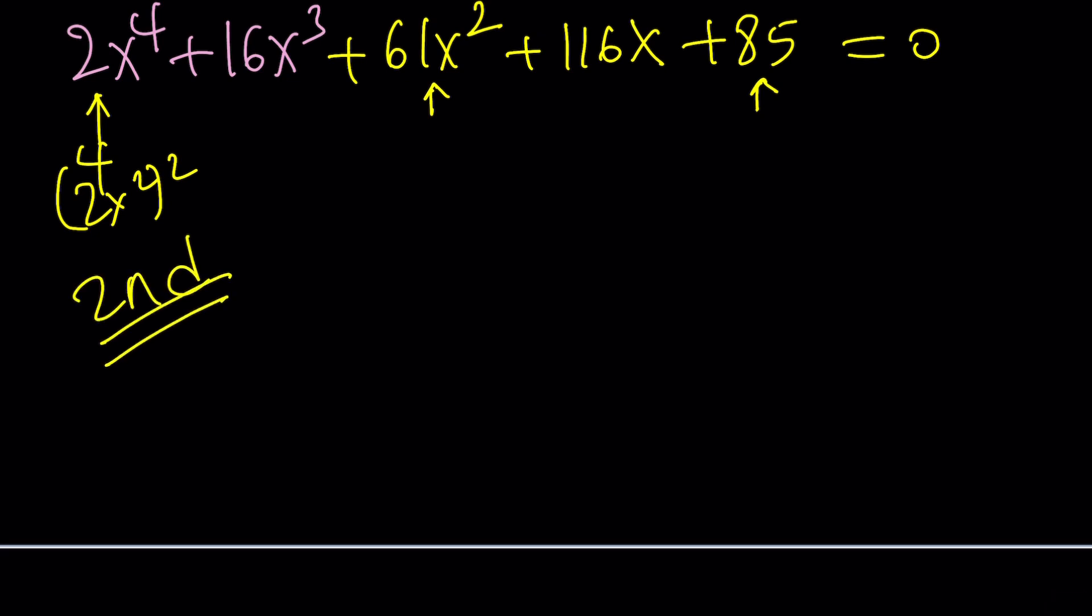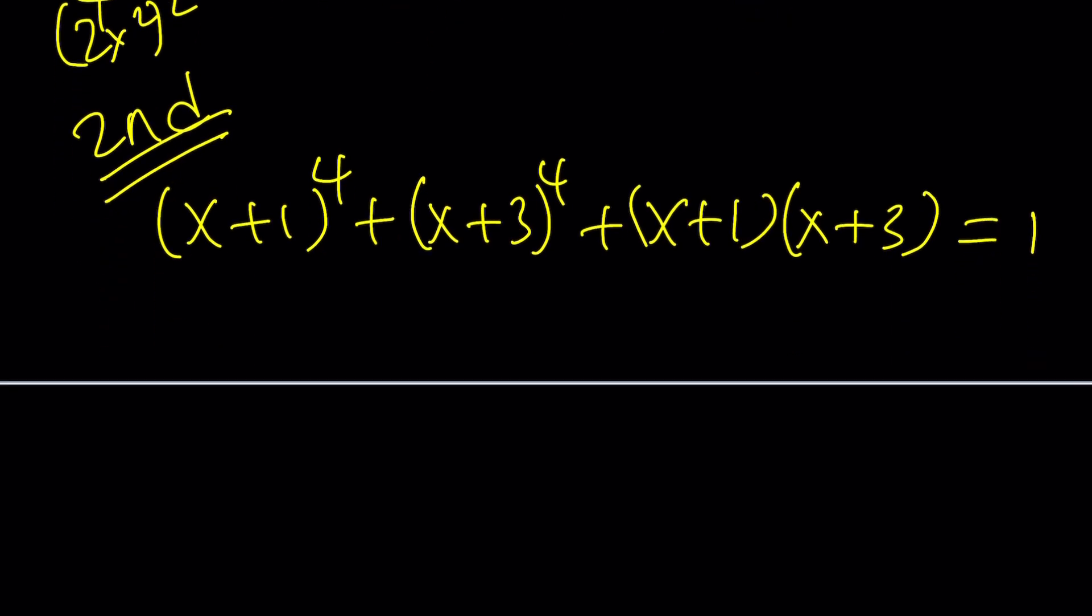Now, first of all, you probably noticed that we have the (x+1) and (x+3) being repeated. There's a good reason behind that. And also, (x+1) and (x+3) are nicely separated by 2. That's also good. So this calls for what? Substitution. This definitely calls for substitution. But the million dollar question is, what should be called what? What does that mean?